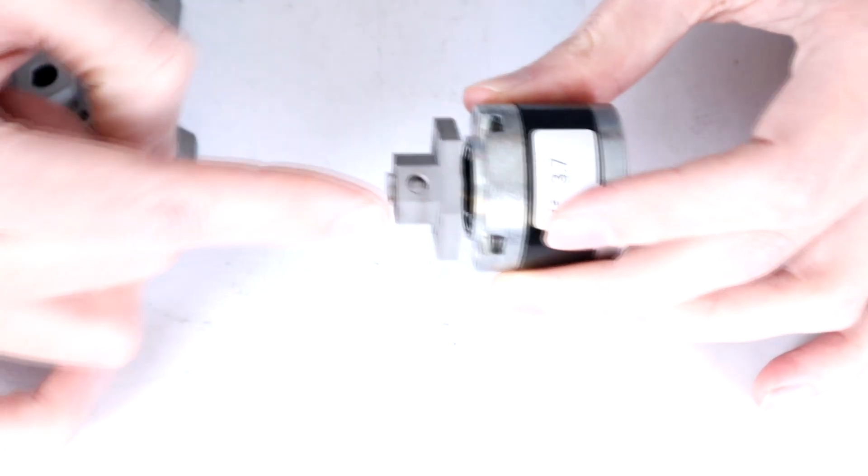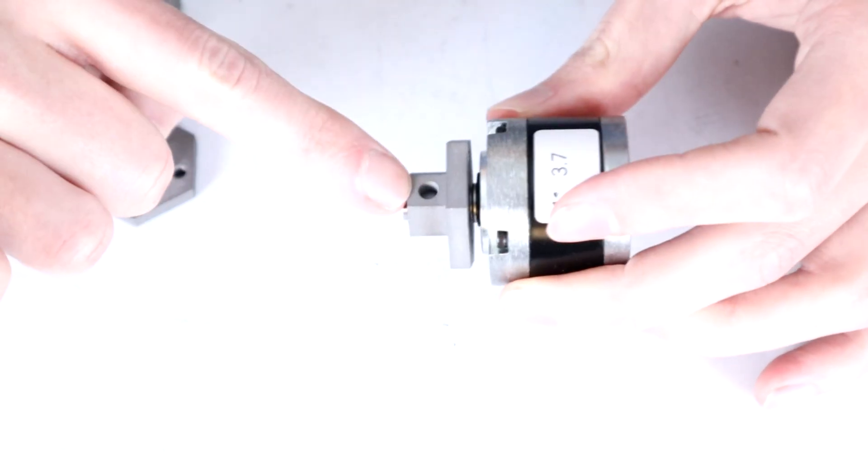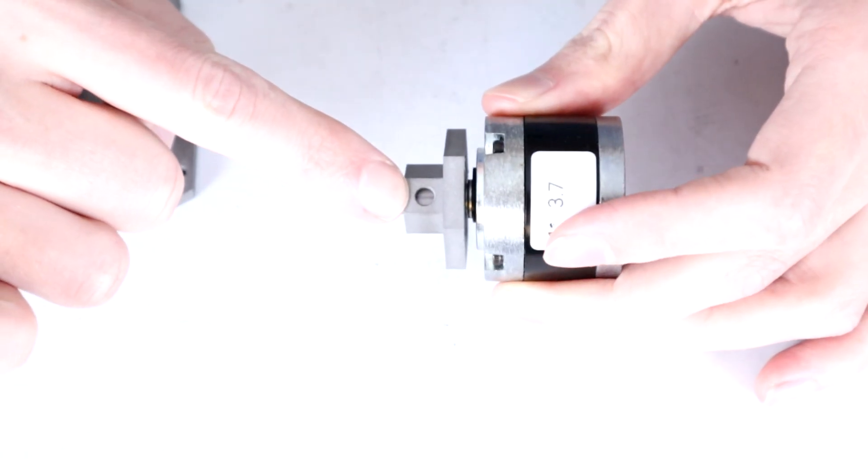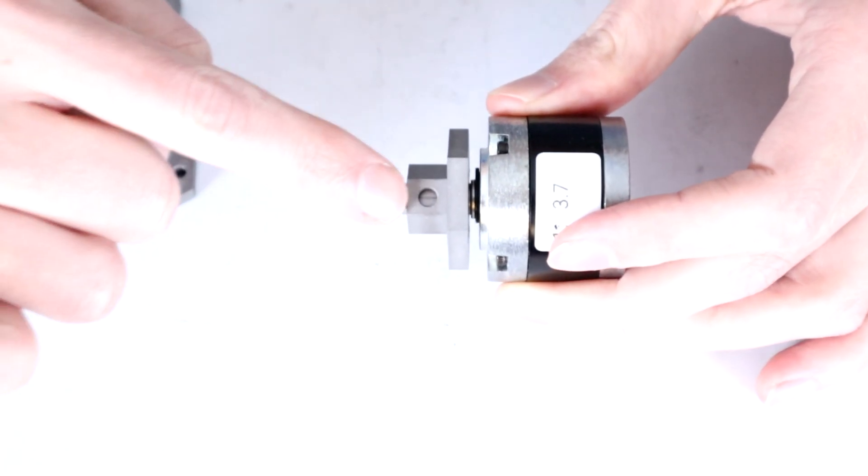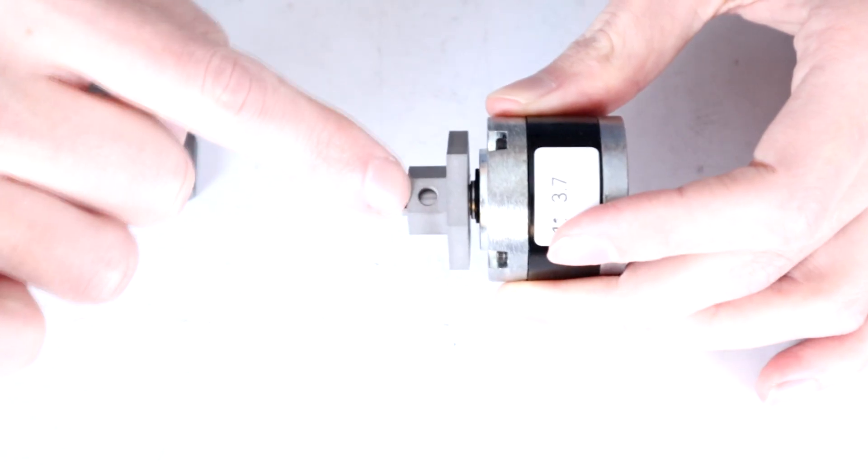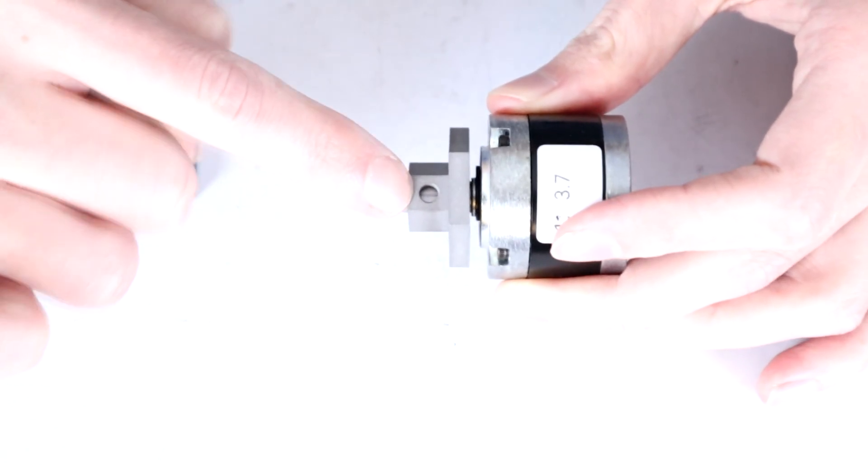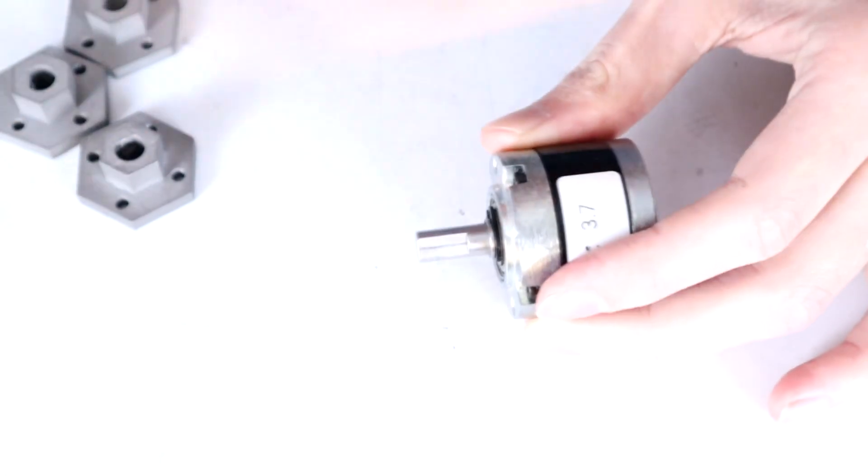Now the big problem here is I can't just put this on and drill through this hole because of course there is a nice thread in here and if I put a drill through even if it's a smaller drill I risk messing up this threaded hole. So I have come up with another plan.